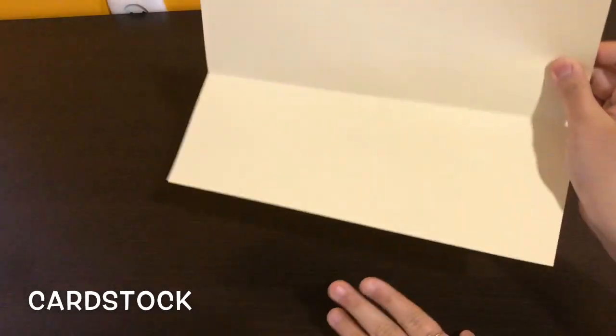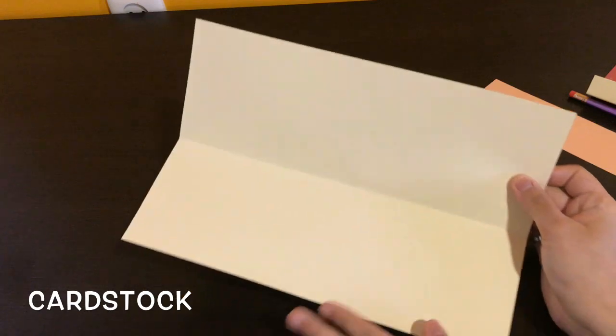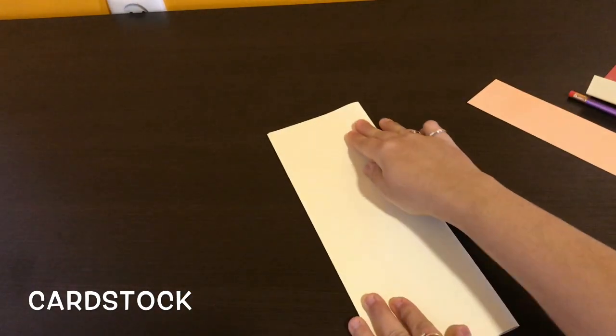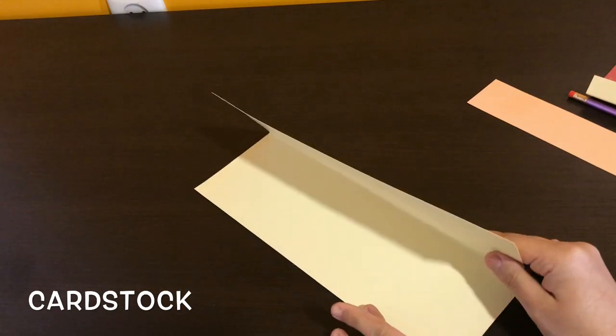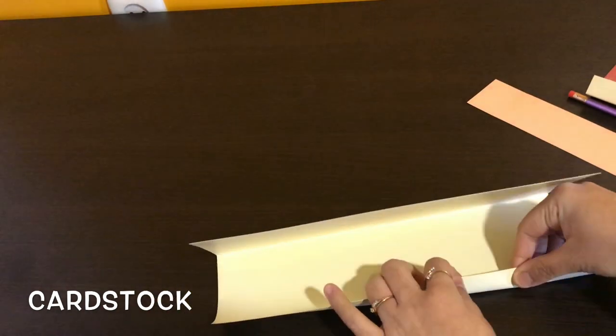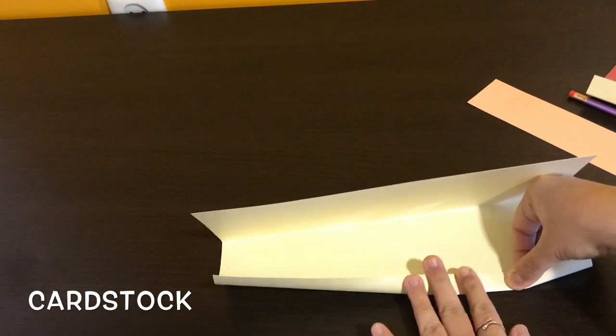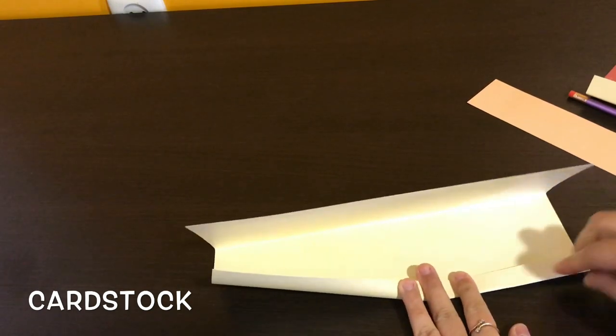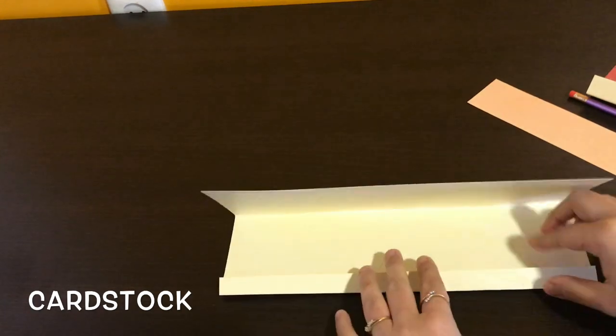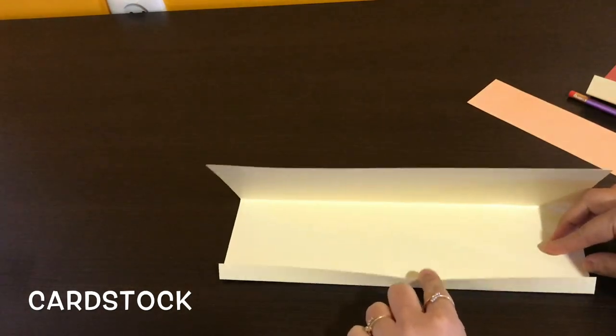So for this activity, you need a simple cardstock paper A4 size. What I've done is vertically I have halved it. So once you halve it, on the lower part of the portion, you just need to create a little bit of a pouch. I would say 1 cm is enough.